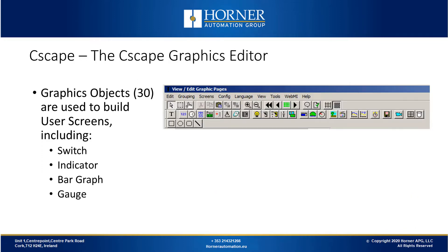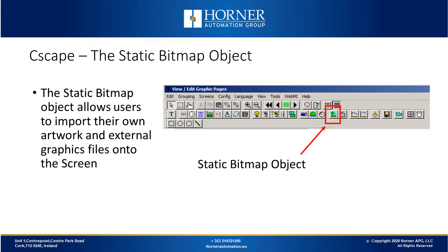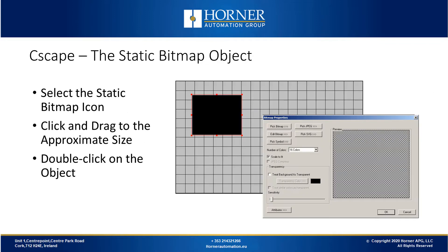To start developing graphics in Seascape, you need to open the Seascape graphics editor. There are 30 objects that you can use to build your screens, including switches, graphs, and gauges. We'll be discussing the Static Bitmap object. This is an object that you can use to import your own graphics or artwork into a screen on the OCS. You can use this object by clicking on its icon and dragging it to size on your screen.